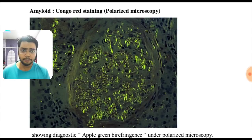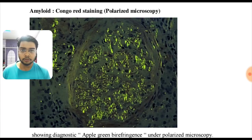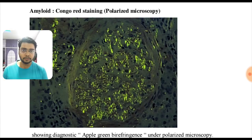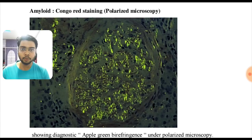This is a new pattern type of question: a polarized microscopy picture of Congo red staining showing amyloid. This is the apple-green birefringence under polarized microscopy that you all know.